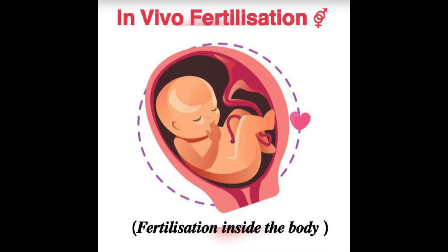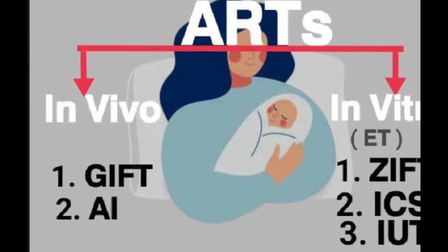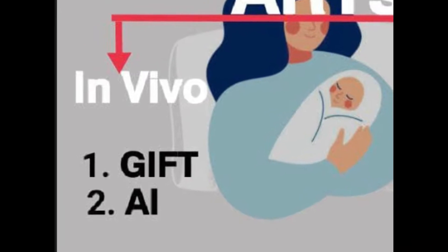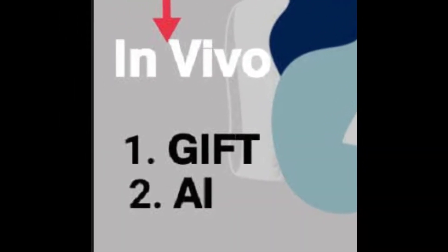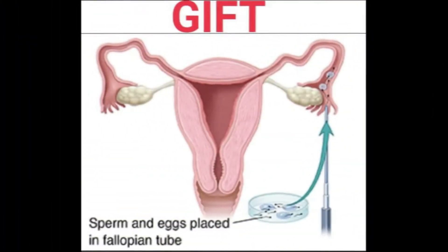In vivo fertilization means fertilization inside the body. In vivo fertilization includes two methods: gamete intrafallopian transfer (GIFT) and artificial insemination (AI). GIFT involves the transfer of an ovum collected from a donor female into the fallopian tube of another female who is unable to produce ova.